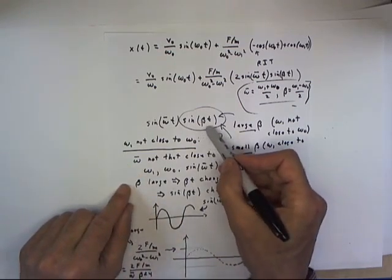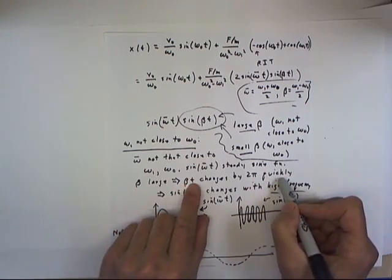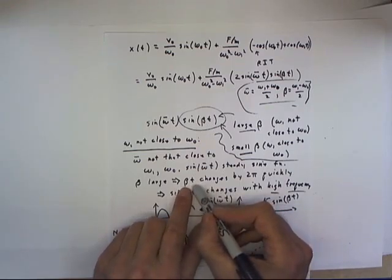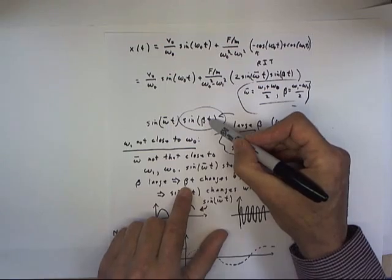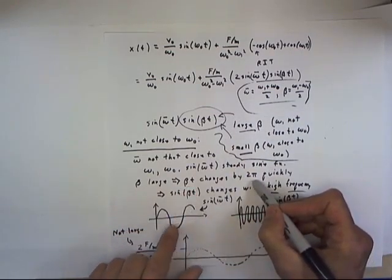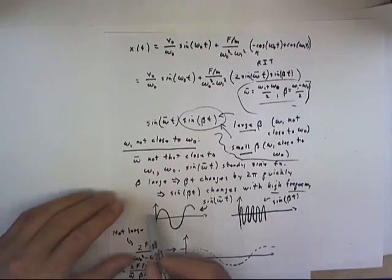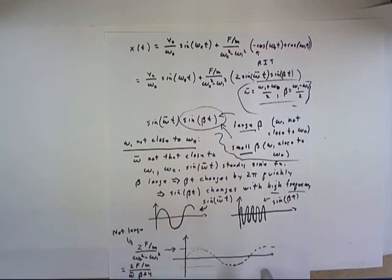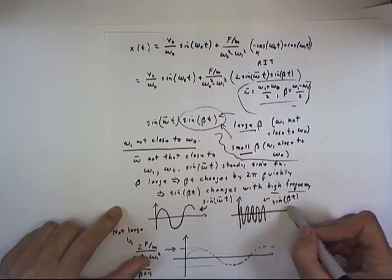What does a large beta do to sine of beta t? It means that beta t will change by 2π more quickly — if beta is big, then t doesn't have to change that much to change the value of beta t by 2π. Every time beta t changes by 2π, the sine function completes another cycle. So if omega-1 is not close to omega-naught, beta is relatively large, beta t changes fairly quickly, and the sine of beta t runs through its cycles with a high frequency. If we graph sine of omega-bar t and sine of beta t, the latter will have a much higher frequency.